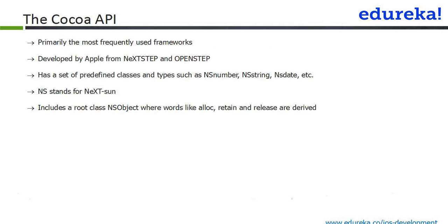The Cocoa API is primarily the most frequently used framework, developed by Apple from NeXTSTEP and OpenStep. It has a set of predefined classes and types such as NSNumber, NSString, NSDictionary, etc. The NS prefix stands for NeXT and Sun, to honor Sun's contribution in the development of this API. The root class of this API is NSObject, and this is where words like alloc, retain, and release are derived — all having to do with the object lifecycle, as Objective-C has automatic reference counting and its own memory management.